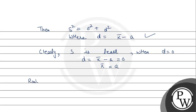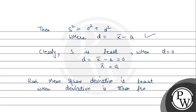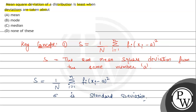So from here we can say that root mean square deviation is least when deviation is taken from the mean, which is x-bar. Matching with the given options, option A is the correct answer, which is mean. I hope you all understand it well.